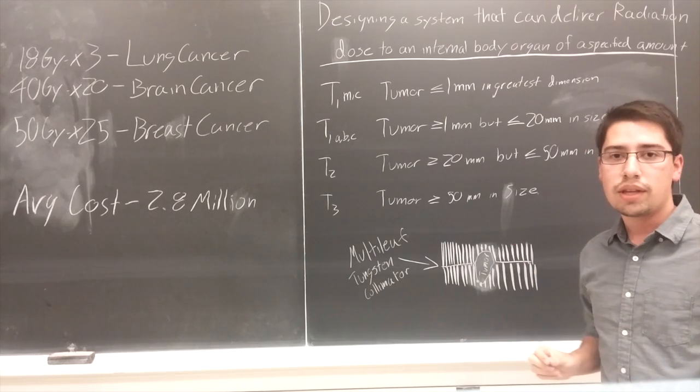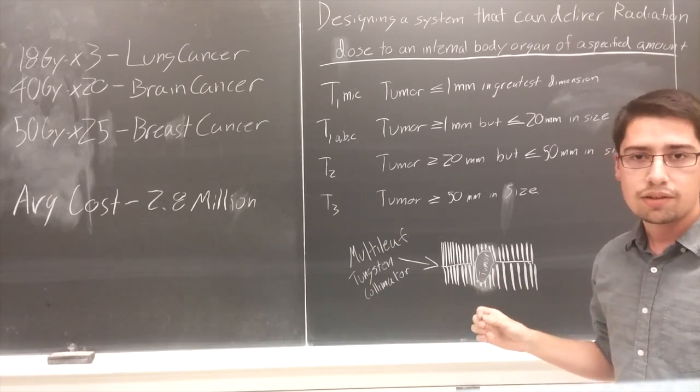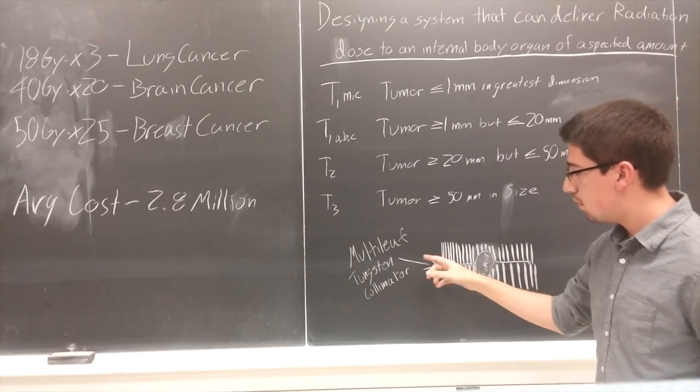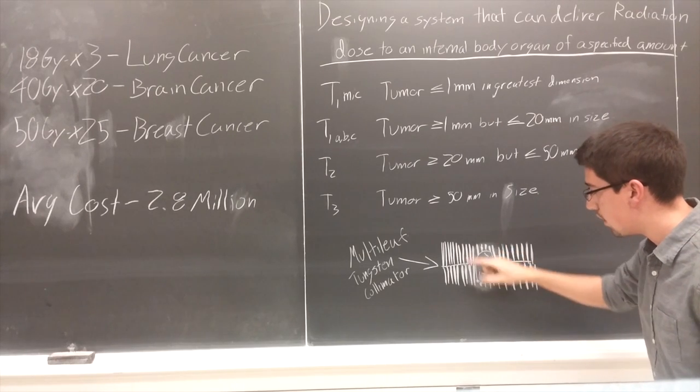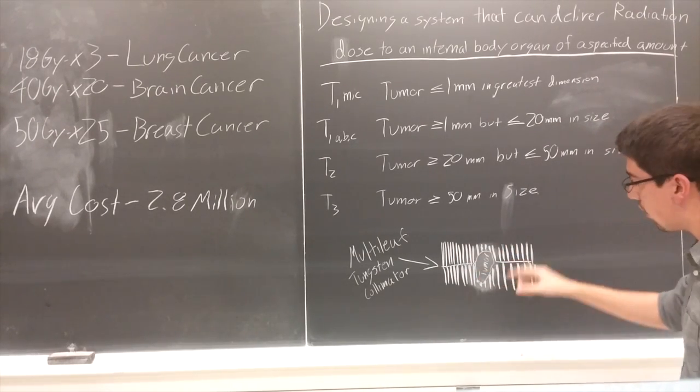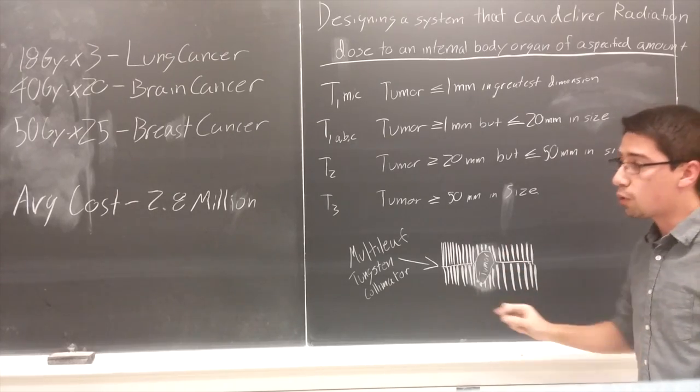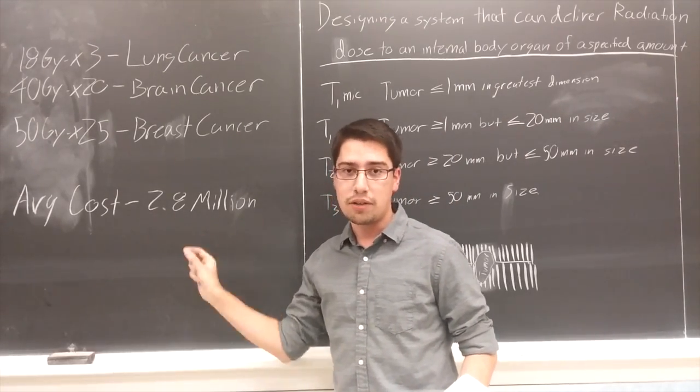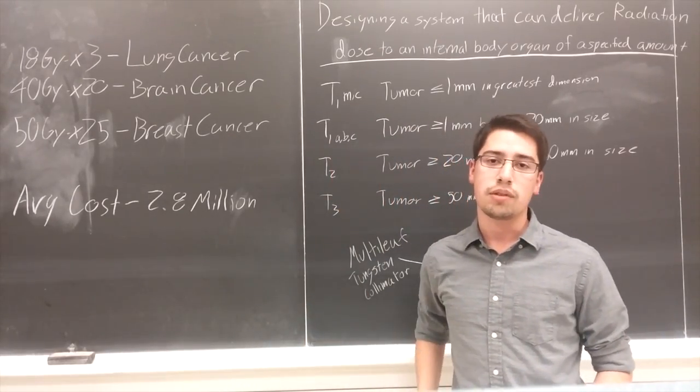And another very important thing is the shape of the tumor, which is why our specific linear accelerator has multi-leaf tungsten collimators at the very end to adjust to the size using all these tungsten sheets right here, to adjust to the size and the shape of that tumor. Of course, the cost comes up to 2.8 million, but I don't think that's because of the tungsten. That's because of the design, which we will go into next.